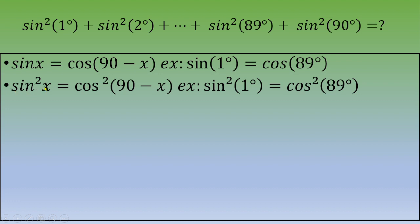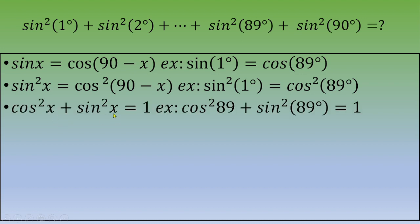Squaring both sides gives us: sine squared x = cosine squared (90 − x). As an example: sine squared 1° = cosine squared 89°. The last formula is: for any value of x, cosine squared x + sine squared x = 1. To illustrate: cosine squared 89° + sine squared 89° = 1.